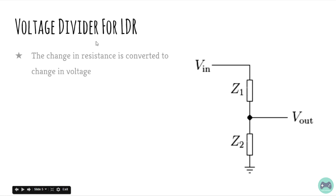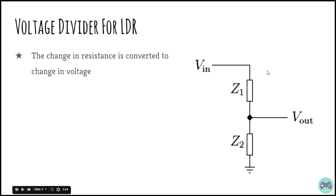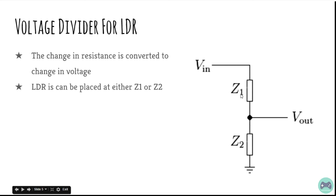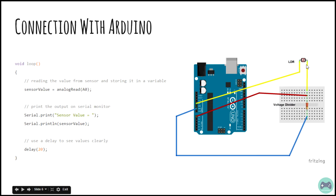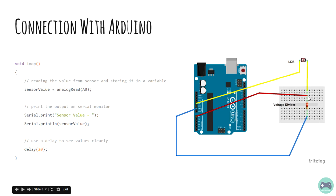This is the voltage divider circuit for LDR and this LDR can be placed at either Z1 or Z2. When it is placed, the change in resistance is converted to the change in voltage that can be given to the Arduino. So this is how you have to connect your LDR to the Arduino. Have a look at this circuit and you can see that you connect this to A0. If you want to see the value being returned from this voltage divider circuit, you have to use analog read of A0 and then just display it on the screen.